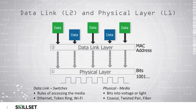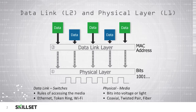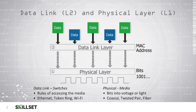The physical layer, or layer 1, is where the data is converted into bits to be prepared to transmit over some type of physical media. It can either be transmitted as pulses of light or as voltage over coaxial, twisted pair, or fiber optic cabling.